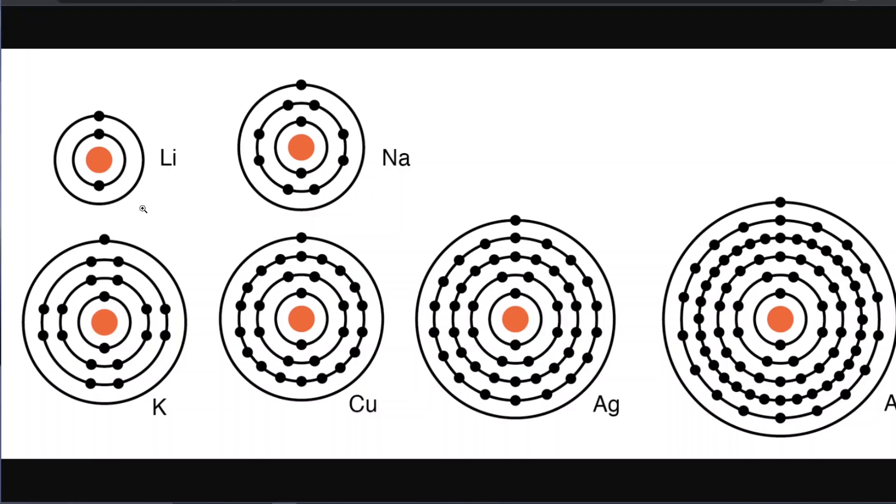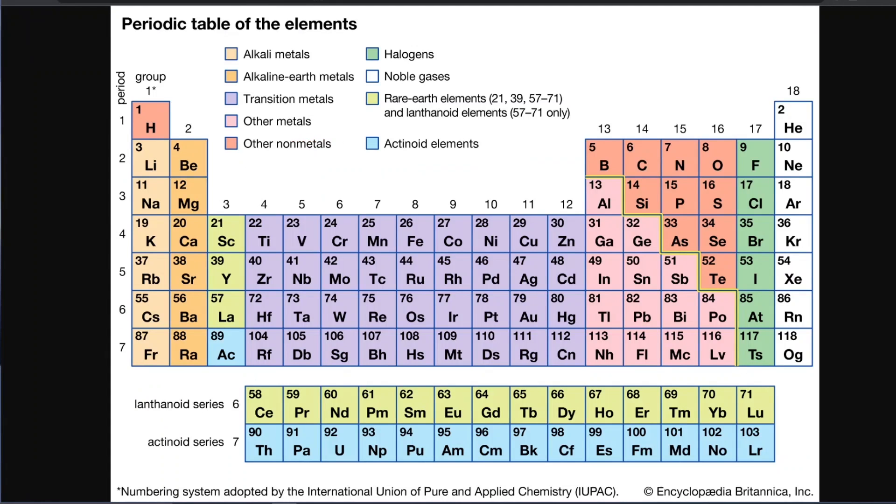And the reason that they're highly reactive is because they have only one electron in their valence shell. So if you remember from high school chemistry or physics, the valence shell is the most outermost electron shell of the atom. The valence shells want to be filled. They want to be full of electrons. The noble gases—their valence shells are completely full, and that's why they're non-reactive. These guys don't react with other things generally.